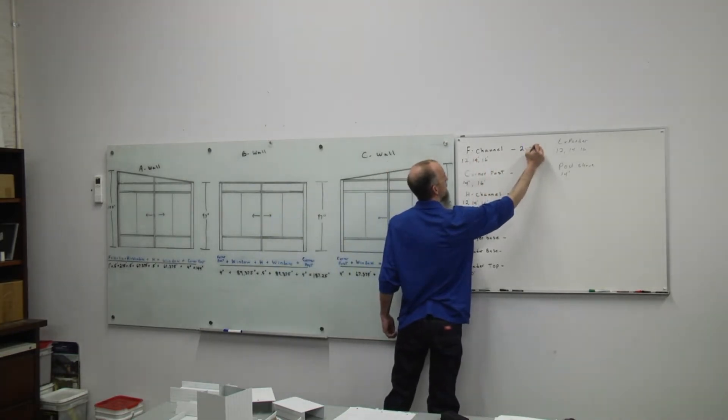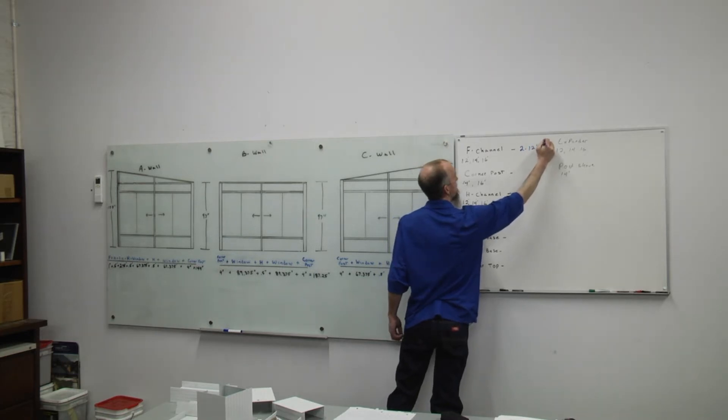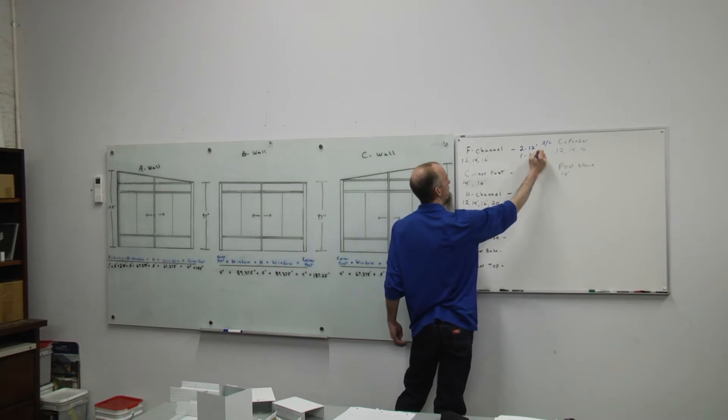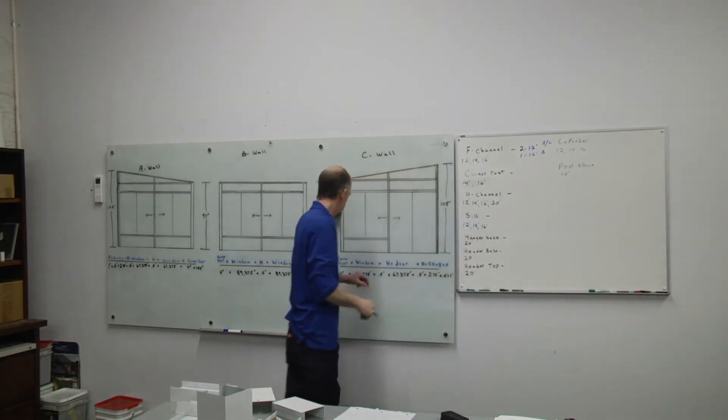So our F channel will need two 12 foot, that'll do our A and our C wall. We'll need one 16 foot, that'll do our B wall base.